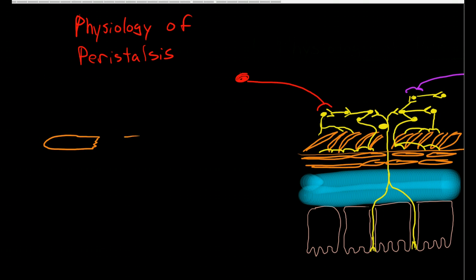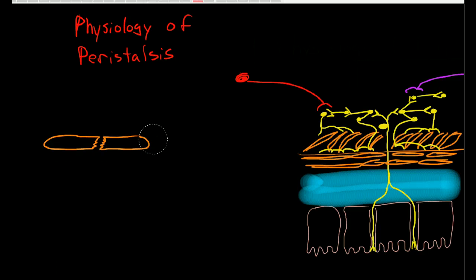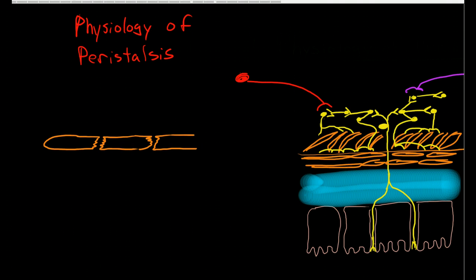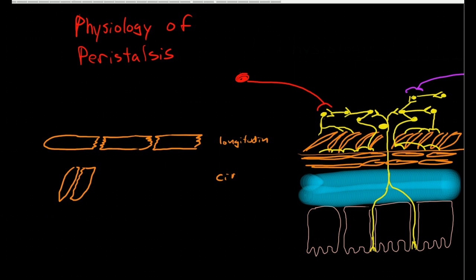Just like cardiac myocytes, these smooth muscle cells within the GI tract are a syncytium. I should say actually each layer is a syncytium, so the longitudinal layer is one syncytium and the circular muscle layer is another syncytium.